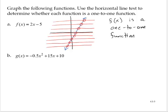Let's consider g of x is equal to negative 0.5x squared plus 15x plus 10. Now we know that this is a parabola since we have a quadratic function. So the graph is a parabola opening down. With a little bit of work, we can find the vertex is at 15, 122.5. And so that's back from chapter 4.